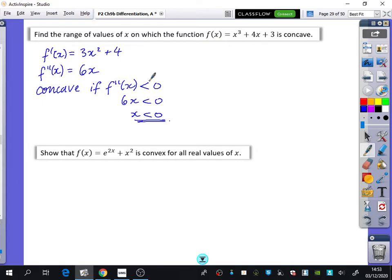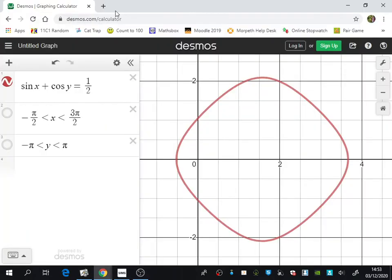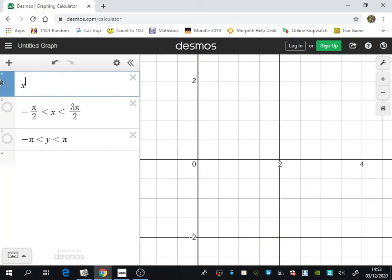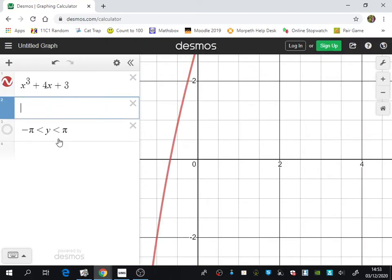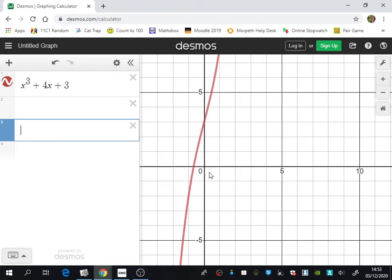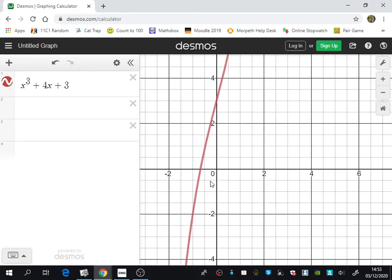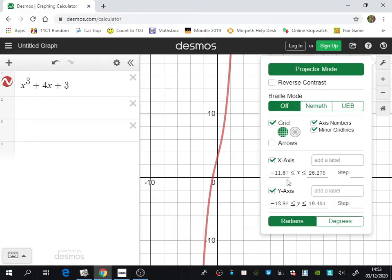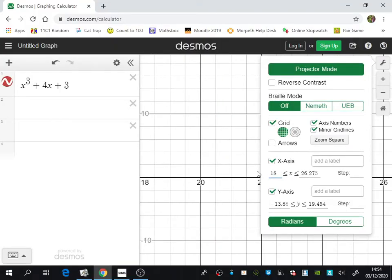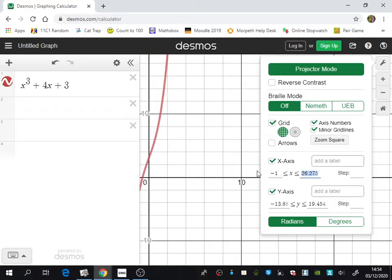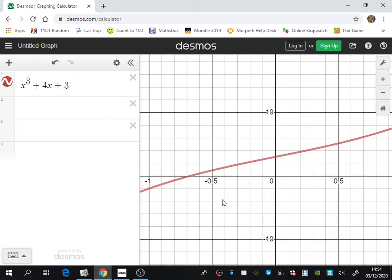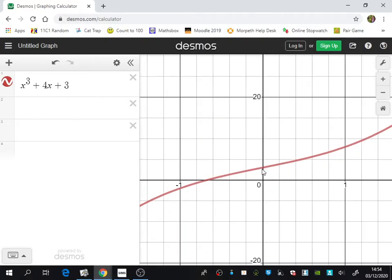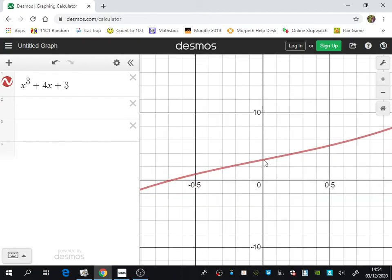And again, I'm just going to quickly show you what this looks like on Desmos. So it's x³ + 4x + 3. Now it's kind of hard to even tell. Let's change the x-axis so that it's between one.